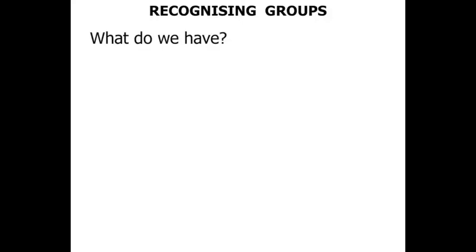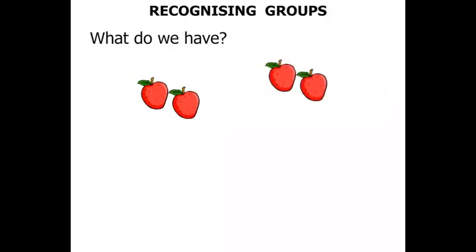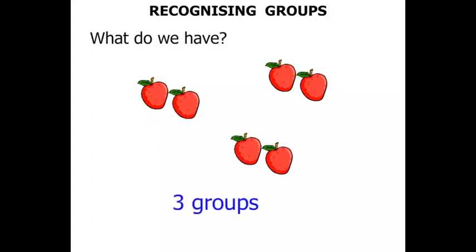Now this question is: what do we have? We've got some strawberries — some more strawberries there, some more strawberries again. We've got three groups. But we're going to add a little bit more information. How many in each group? There's two strawberries. So we've got three groups of two. There's two in each group.